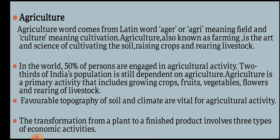Primary activity includes growing crops, fruits, vegetables, and flowers, as well as rearing of livestock. Agriculture requires favorable topography of soil and climate. These are vital for agricultural activity.